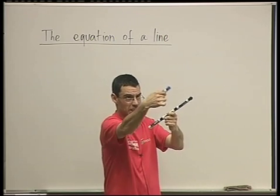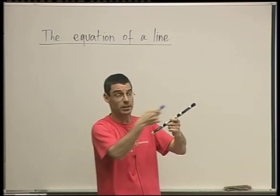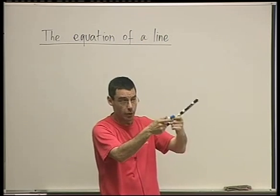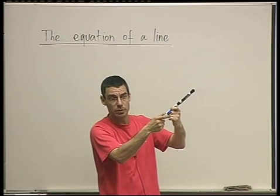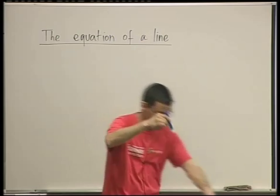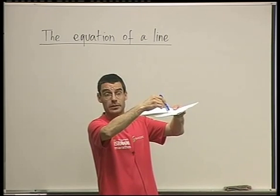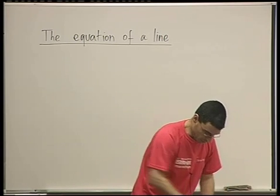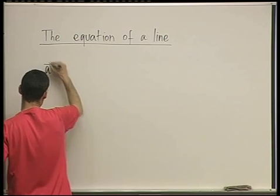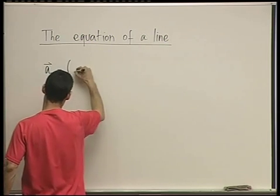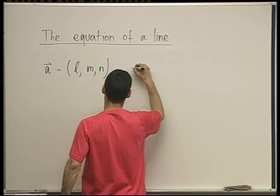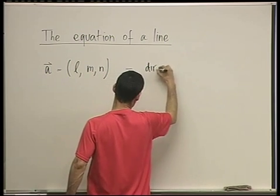But this vector could be here, or here, or here, as long as it's pointing in the same direction. However, the line is fixed. I want this specific line. So what else do I need to determine it? I need a point through which it goes. So a point and a vector determine a line, just like a point and a vector determine a plane via the normal. So the usual name is going to be little a, and the components are often called l, m, and n — this is going to be the direction vector.